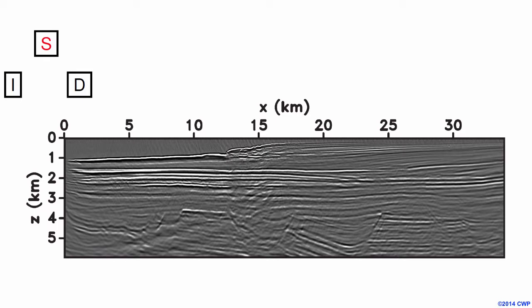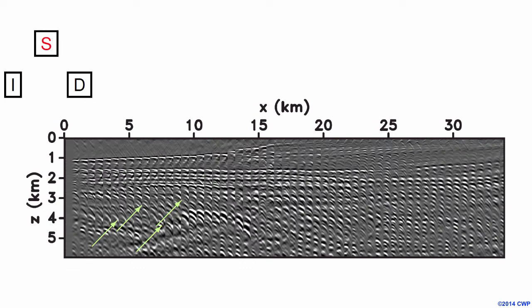This is the RTM image for the starting model. We have many signs of over-migration, especially in the deepest part of the image. The three arrows show some very evident points of over-migration in this dataset with this model. The image also shows, at sparse locations, the angle gathers computed for this velocity model. In the angle gathers there is evident over-migration more or less below three kilometers in depth throughout the section.